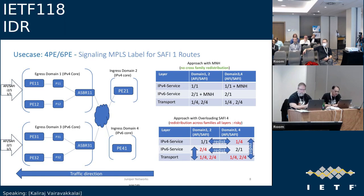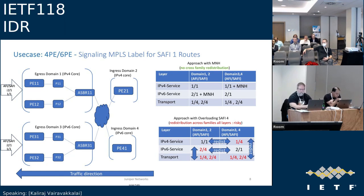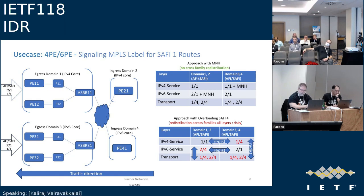The main thing I wanted to talk about is the 4PE or 6PE use case, where we typically want to signal an MPLS label — essentially an explicit null — for SAFI-1 routes. I've taken an example of an Option C network with multiple domains. It's heterogeneous in that some domains are IPv4 cores and some are IPv6 cores. Domain 1 and Domain 3 are ingress domains where Domain 1 is an IPv4 core and Domain 3 is an IPv6 core.